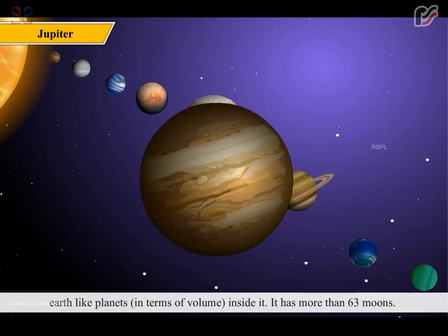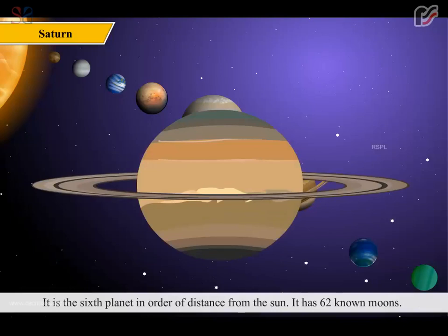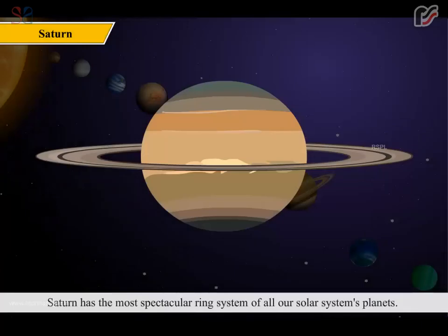Saturn is the second largest planet in the solar system. It is the sixth planet in order of distance from the Sun. It has 62 known moons. Saturn has the most spectacular ring system of all our solar system's planets. It is made up of seven rings with several gaps and divisions between them.